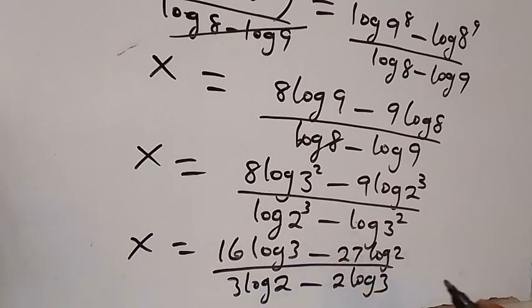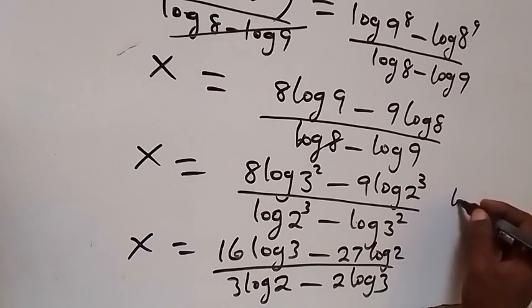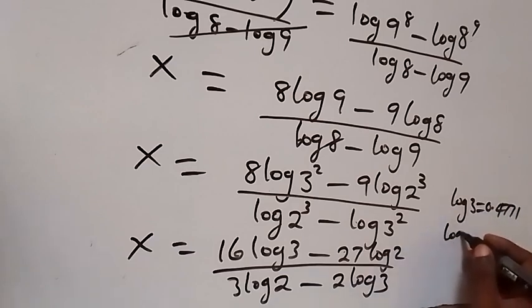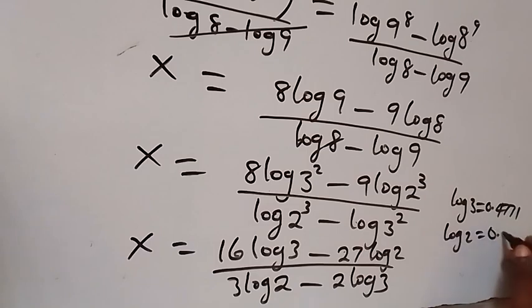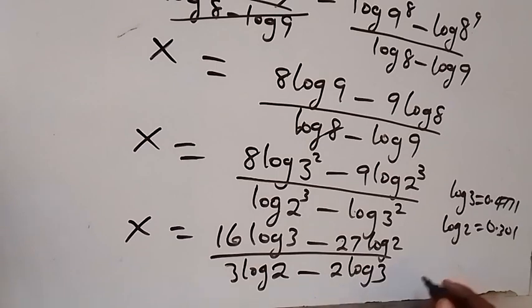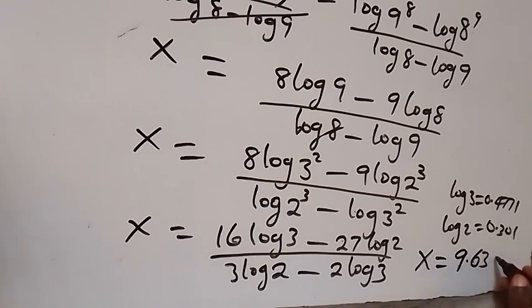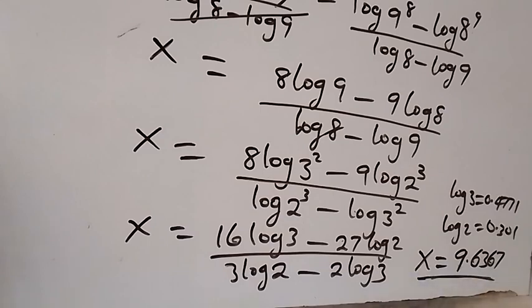Then we substitute the values: log 3 is given to be 0.4771 and log 2 is 0.301. When we substitute these values and simplify, we get an approximate value of x to be 9.36363637.